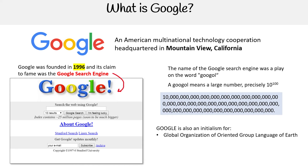Google is also an initialism for "Global Organization of Oriented Group Language of Earth." You can tell they came up with the word Google first and then decided to make it into something. It doesn't make a whole lot of sense — they were just having fun back then.